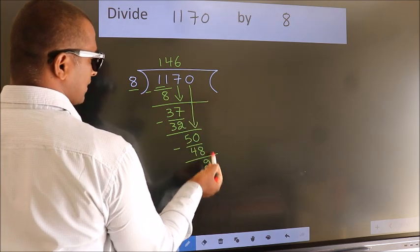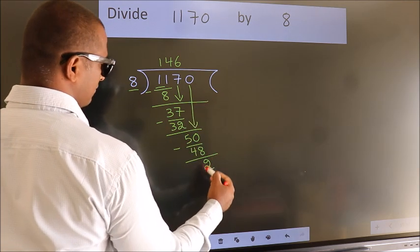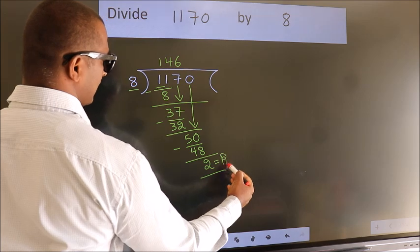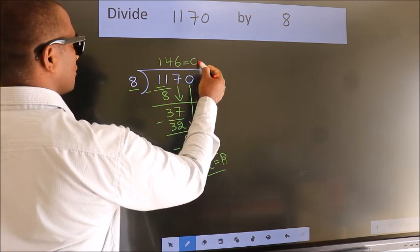No more numbers to bring it down. So we stop here. This is our remainder. This is our quotient.